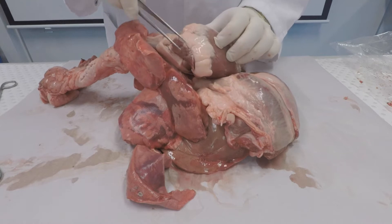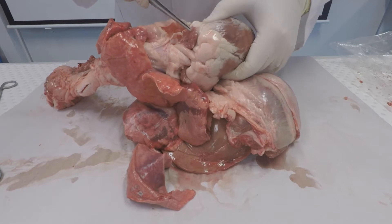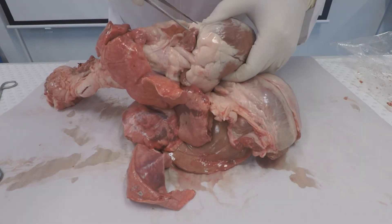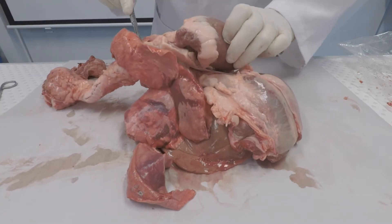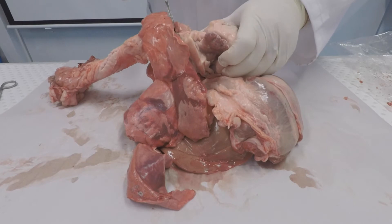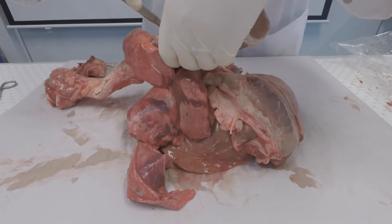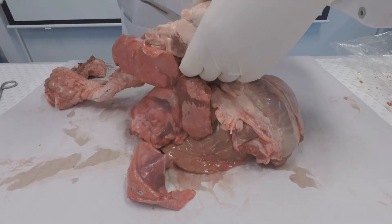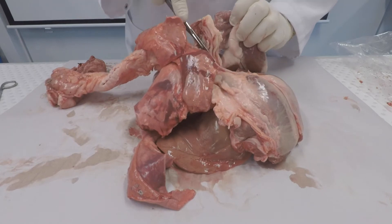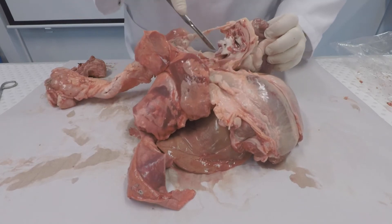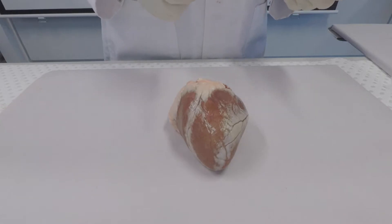That's the atrial. There's the other one. Okay, so we've separated the heart from the remainder of the plucked tissue.